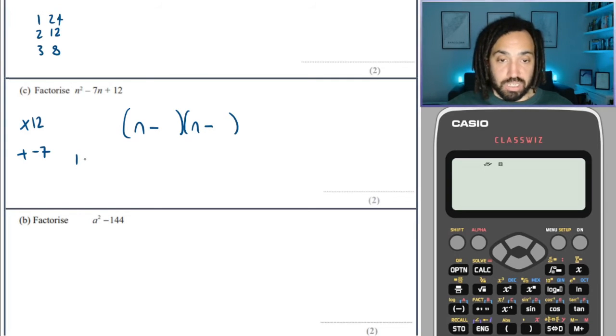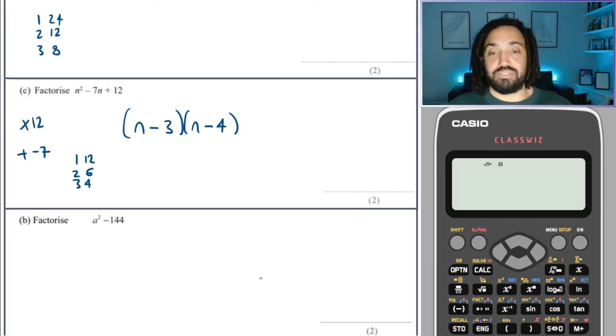Factors of 12 are 1 and 12, 2 and 6, 3 and 4, fits the bill, because they will add to make negative 7. Perfect.